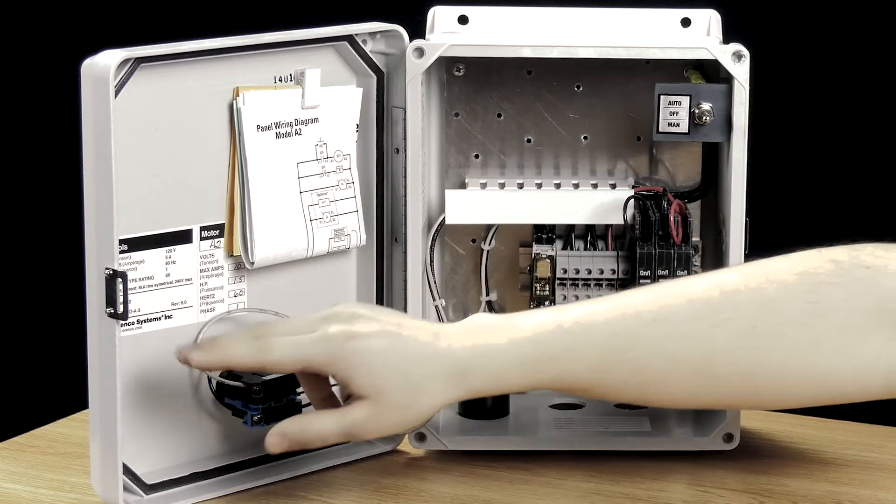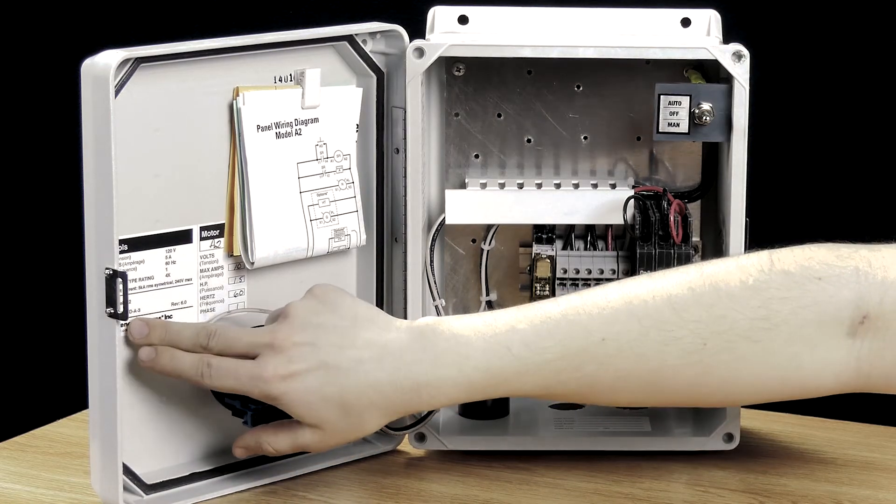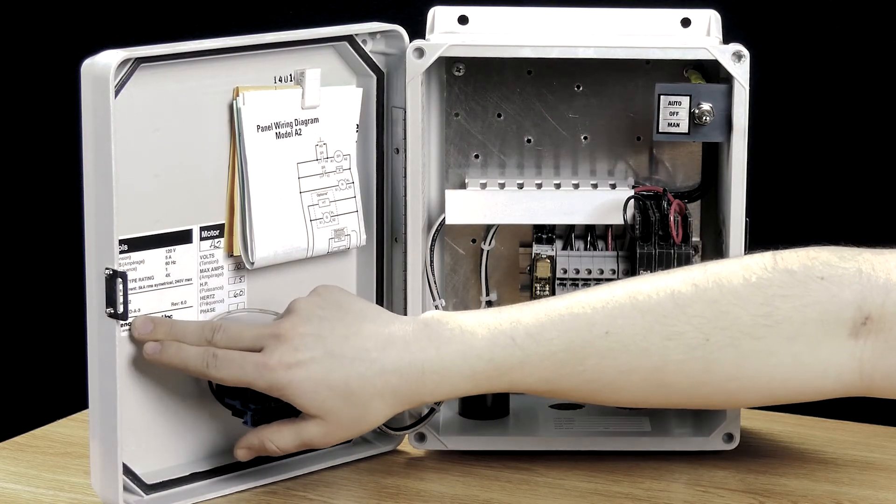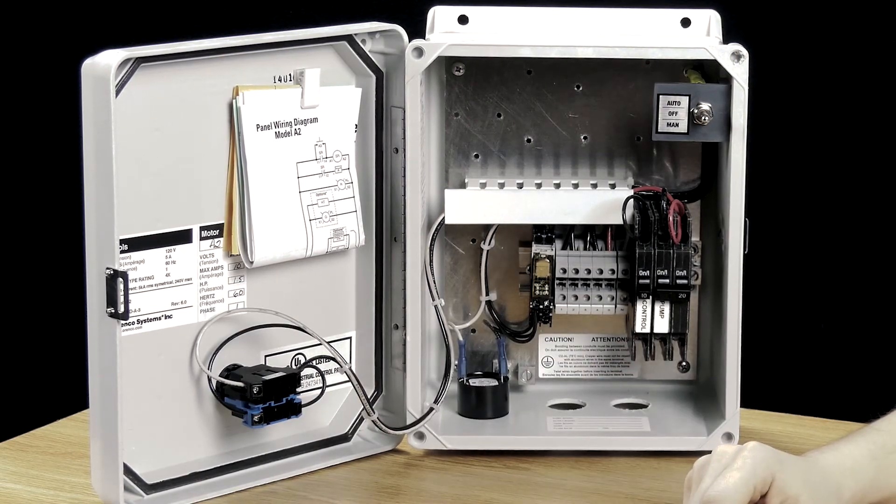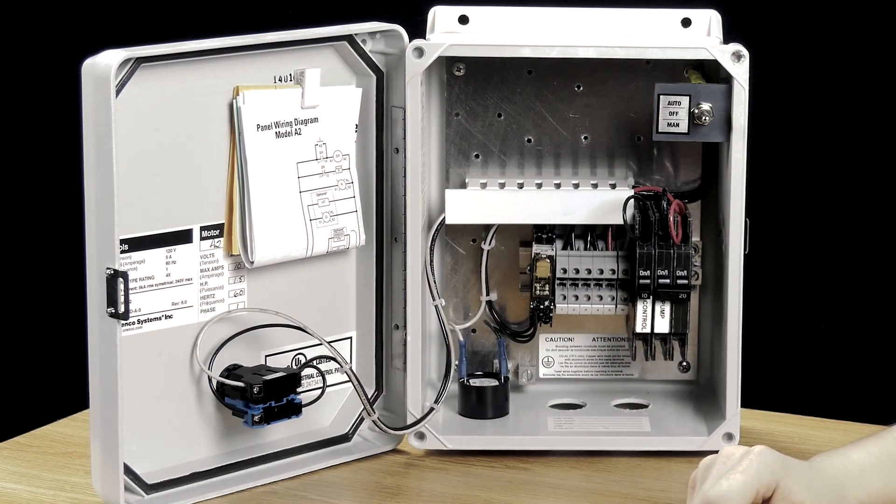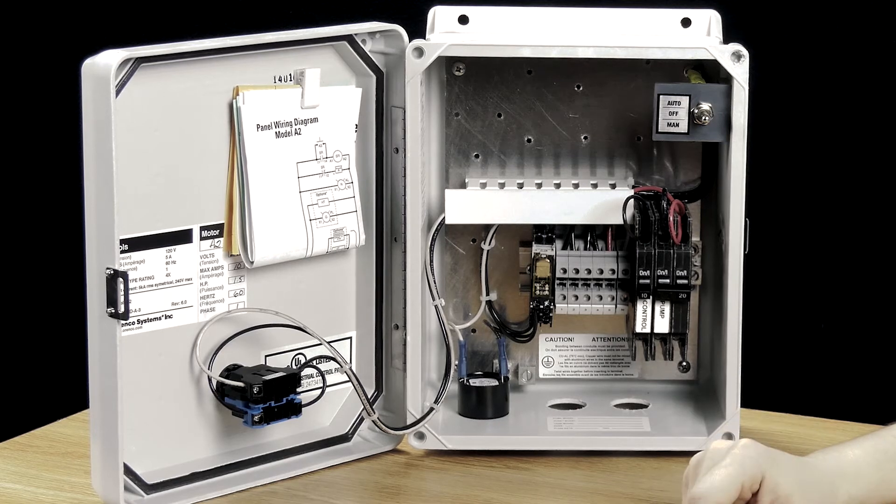Occasionally these documents do walk off or disappear, and Orenco recognized that by putting inside of the panel here a document number, which is going to direct you right to all of these documents in the event that they are lost.